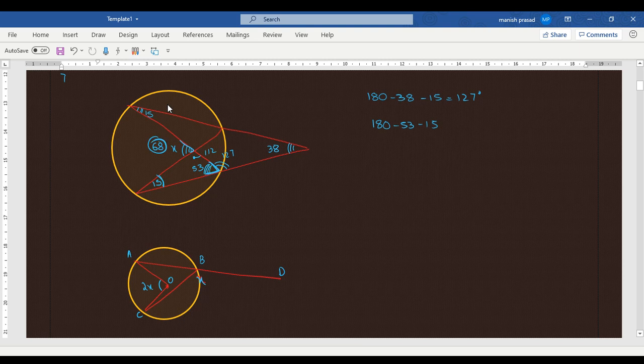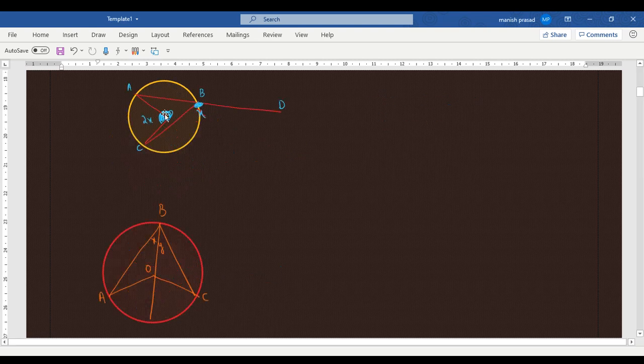Now in the next question, CBD is given as x, and we have to prove that AOC is 2x. Reflex AOC is 2x. Okay, so let's go ahead. For angle ABC, that would be 180 minus x. Angle ABC equals 180 minus x. Perfect.